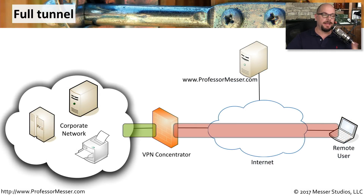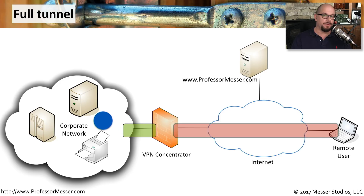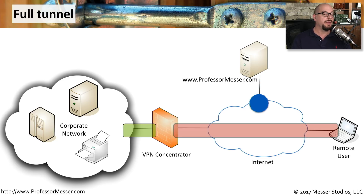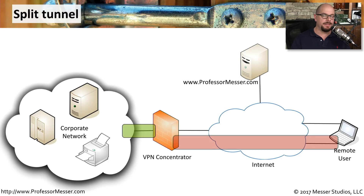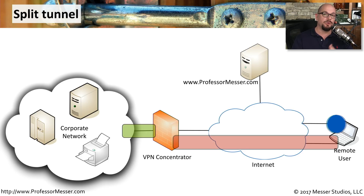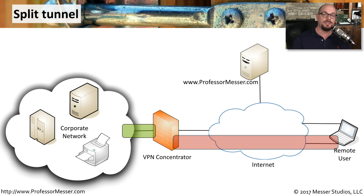If the VPN administrator has set it up as a full tunnel, that means all traffic, regardless of destination, will traverse the tunnel. Traffic to the corporate network obviously goes over the encrypted tunnel, but even traffic to a third-party website will first traverse the tunnel, at which point the VPN concentrator redirects it to the third-party site and routes the response back through the concentrator to you. You can contrast this with a split VPN tunnel, where traffic destined for the corporate network traverses the encrypted tunnel, but traffic to third-party websites uses normal communication outside the VPN. This can speed up communication, and if encryption isn't required for that third-party traffic, there's no reason to use the encrypted tunnel.